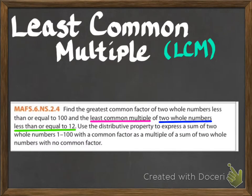Hi. This lesson is on how to find least common multiples, also known as LCM. We're going to be working on finding the least common multiple of two whole numbers less than or equal to 12.